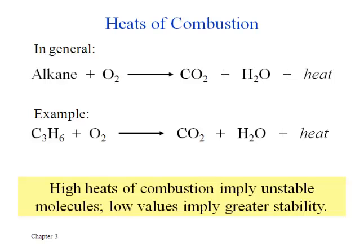Strain theory can be tested by doing an experiment that allows one to compare the stabilities of different sized rings. For alkanes, that has to do with burning them. Alkanes react with oxygen, and if you add enough oxygen you can break them down completely to carbon dioxide and water, which always generates a good amount of heat that can be measured. High heats of combustion imply unstable molecules. When you release a lot of energy, that means you had a lot of potential energy to give up in the first place. Alkanes that don't give up as much energy when burned must have been stable to begin with, so this is a direct measure of stability.